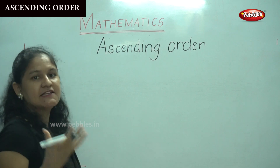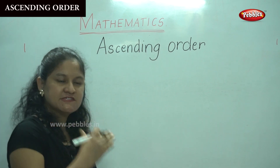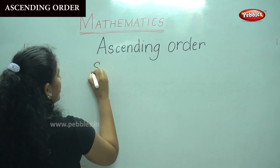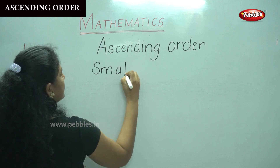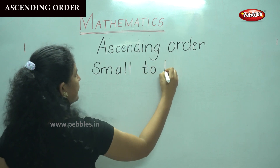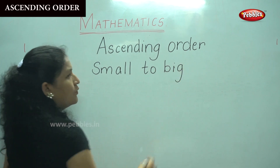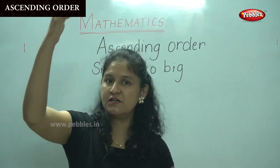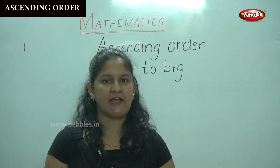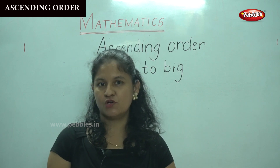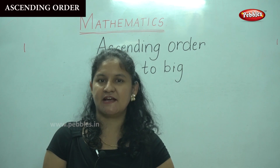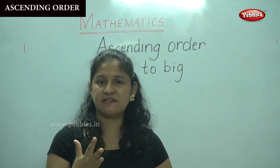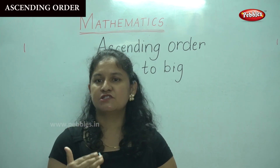Ascending order is nothing but from small to big, or from bottom to top. We can see an example of the lift — it takes you from the bottom to the top. Or the ladder that we have in our house: if we want to put up some decorations, we use the ladder which enables us to reach the top. So ascending order is nothing but small to big.